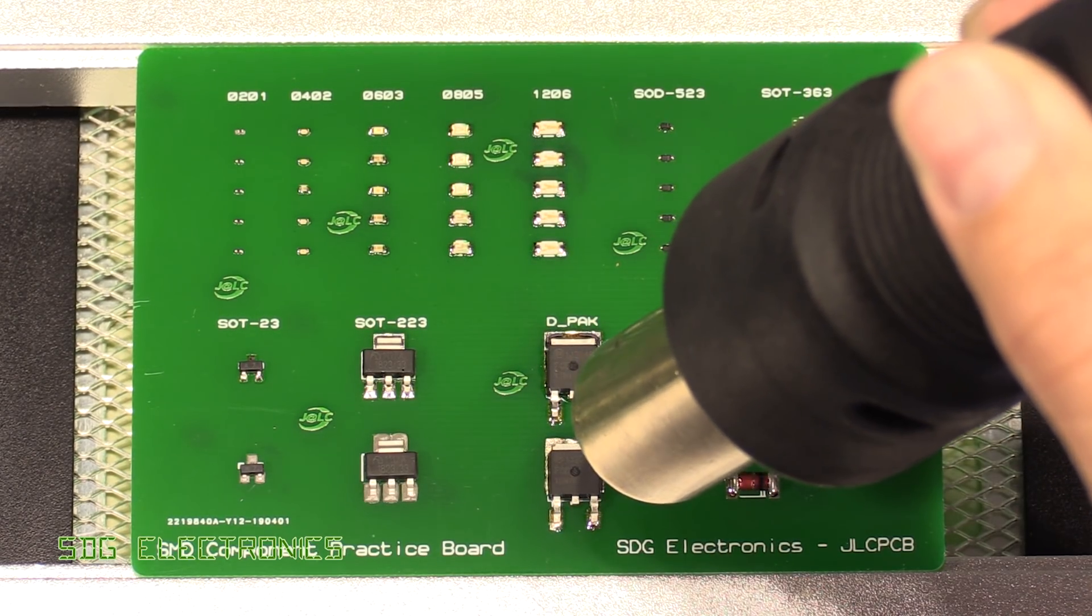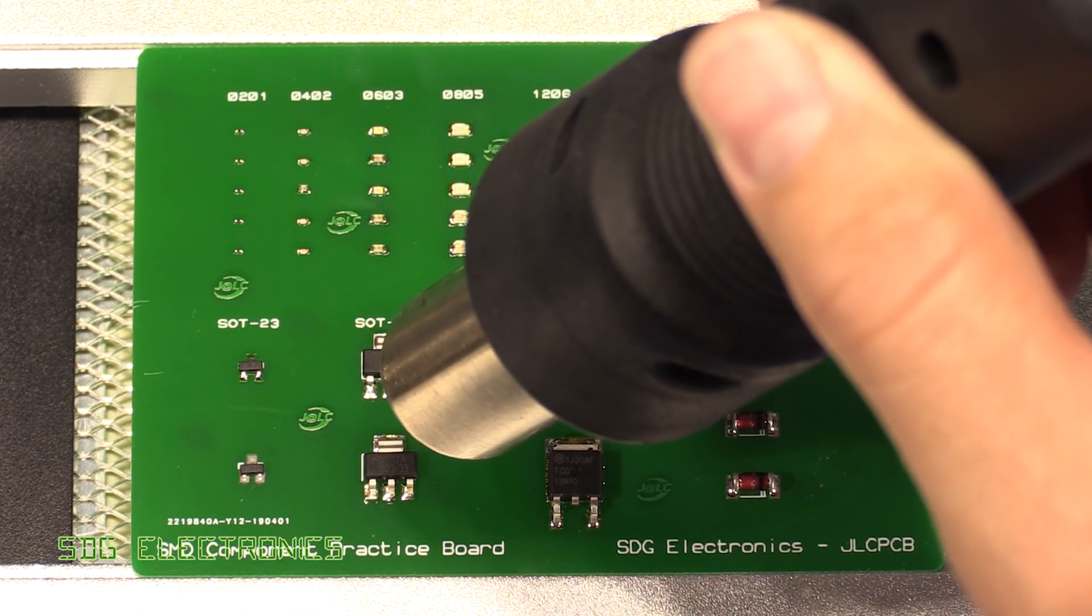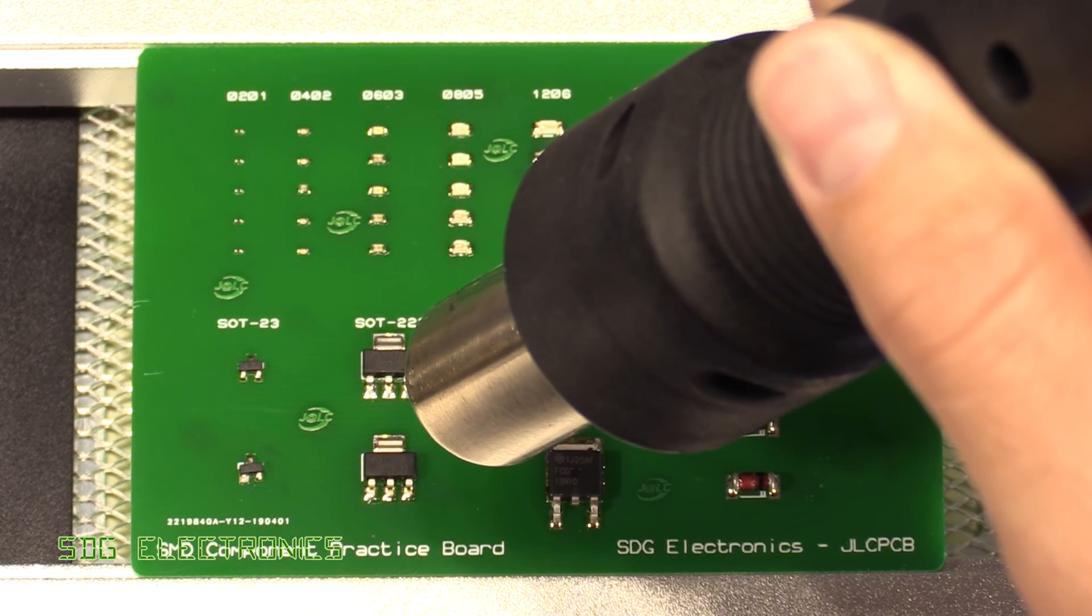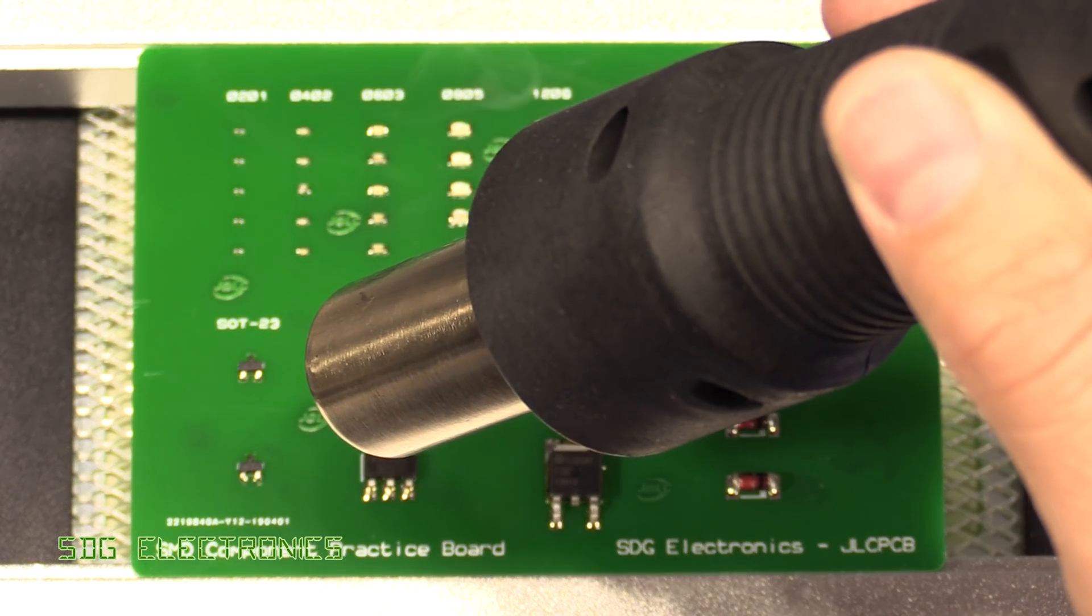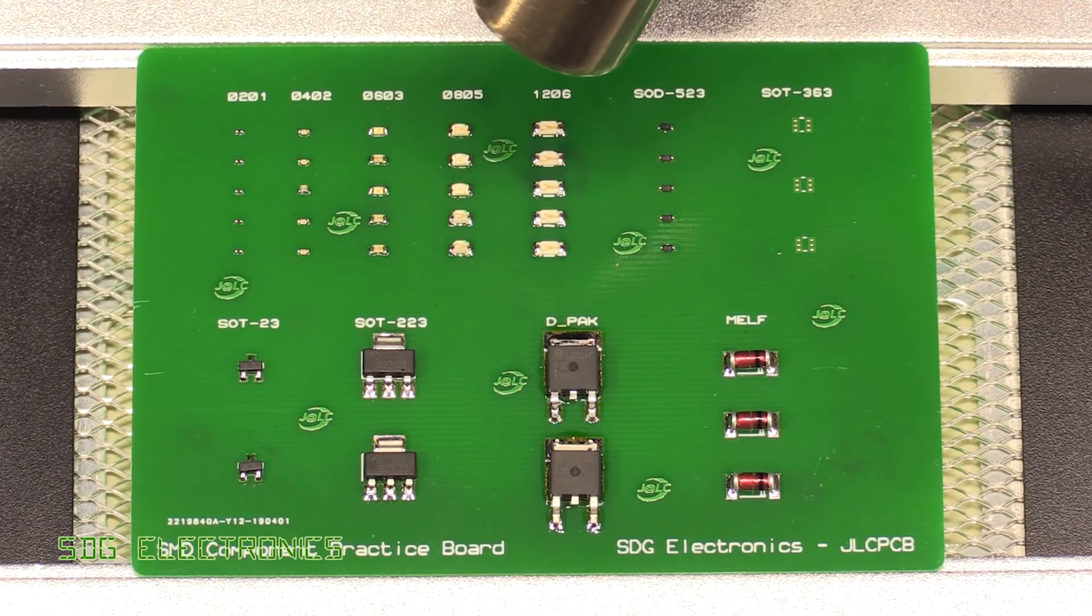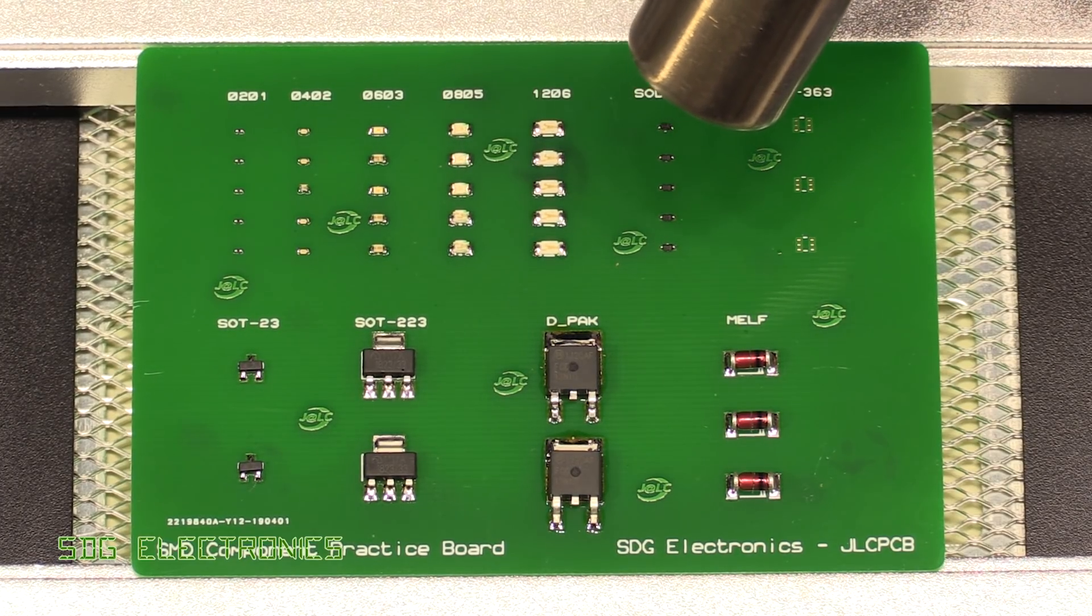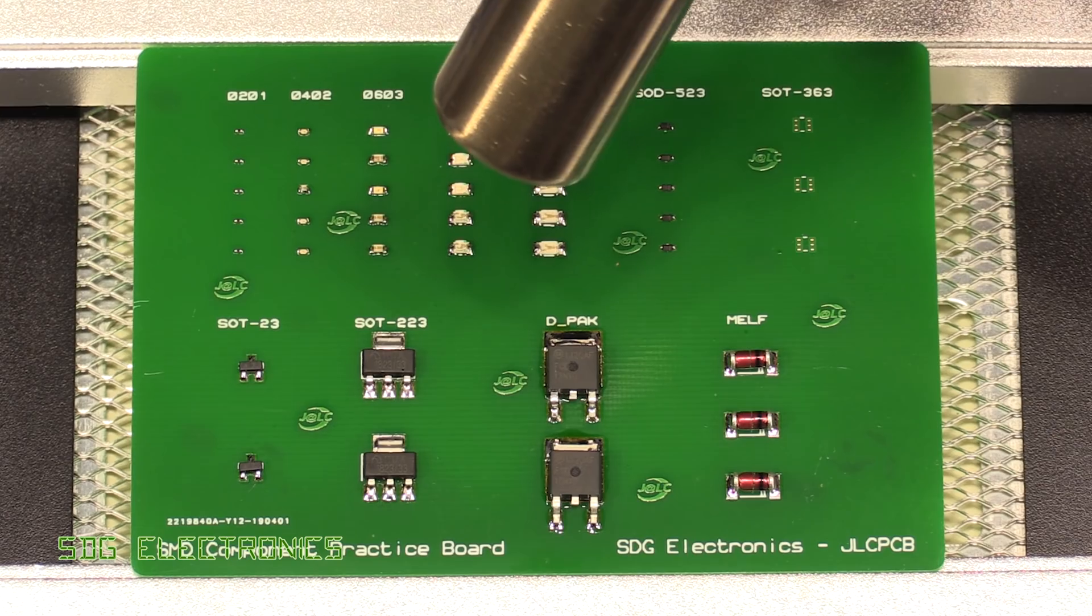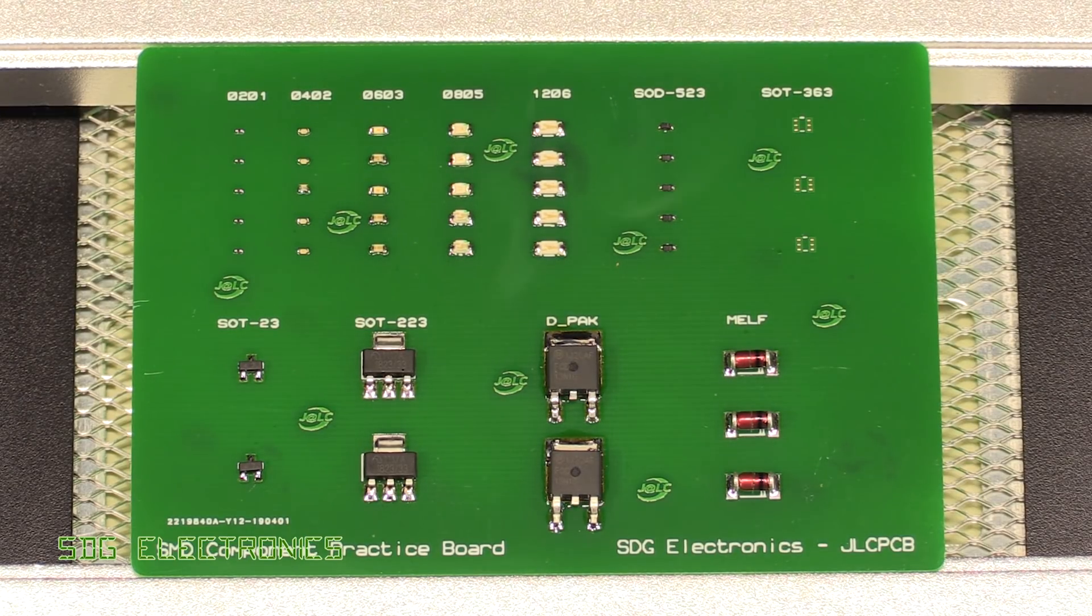Here we go, we're just reflowing the DPAC packages, and similarly the SOT-223 components are reflowing nicely. There we go, that looks about it. Now we can turn off the hot plate and let it cool down slowly by itself.